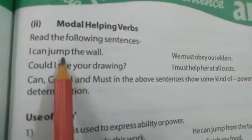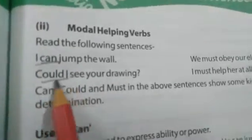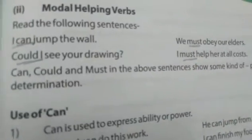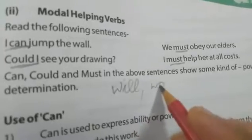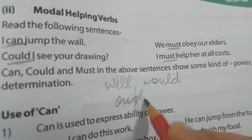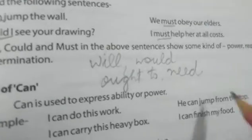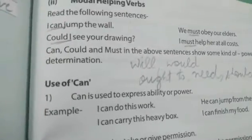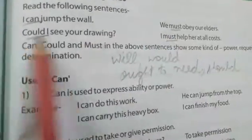Today we will discuss these words. In the examples, I am going to underline them: 'can', 'could', and 'must'. Apart from these, there are a few more modals — will, would, ought to, need, and should — but in this book we are going to discuss only three or four. So can, could, and must are the modal helping verbs, showing power, request, or determination.